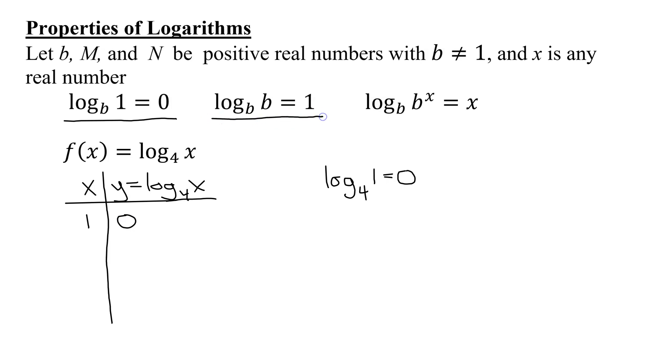Using the next basic property, log_b(b) always equals 1. What's the base in this case? So I know log₄(4) is going to equal 1. The x value is 4, so I have the point (4, 1).